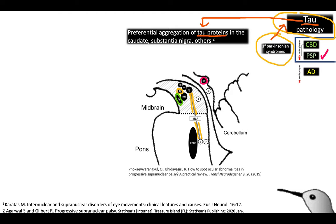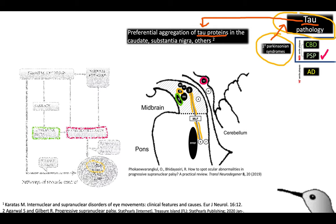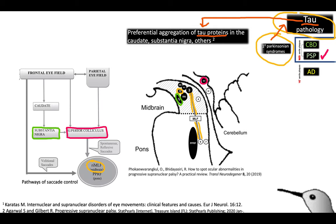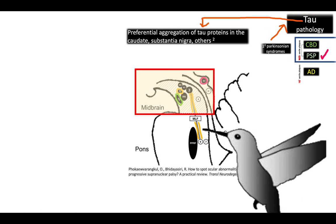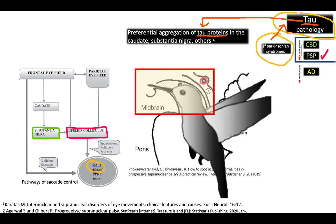Notice that these involved structures are mostly located in the midbrain, and they are involved in the pathways of saccade control. When these structures atrophy, the midbrain becomes small — this is popularly known as the hummingbird sign.